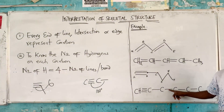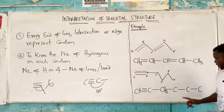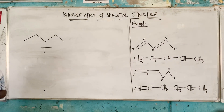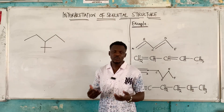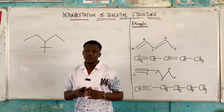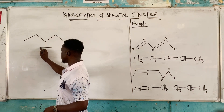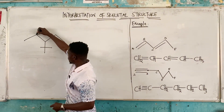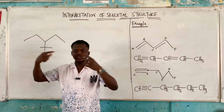Carbon D has two lines, so four minus two is two hydrogens — CH2. Same for carbon E: two lines, two hydrogens. No matter how complex the skeletal structure may look, it should not confuse you. Just follow the principle: every end of line, intersection, or edge represents carbon. These intersections are where two or more lines meet, and these lines stand for bonds that join the carbon atoms together.